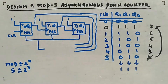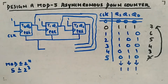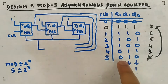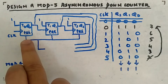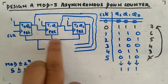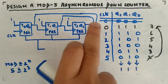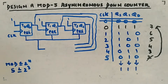So the sequence is: 7, 6, 5, 4, 3 — and whenever 2 comes, preset activates and it goes back to 7. The sequence repeats: 7, 6, 5, 4, 3, 7, 6, 5, 4, 3, and so on. To achieve this, all flip-flops must be preset to 1, since preset makes the output 1. All of them get preset together and show output 1,1,1 — that's how you use preset.